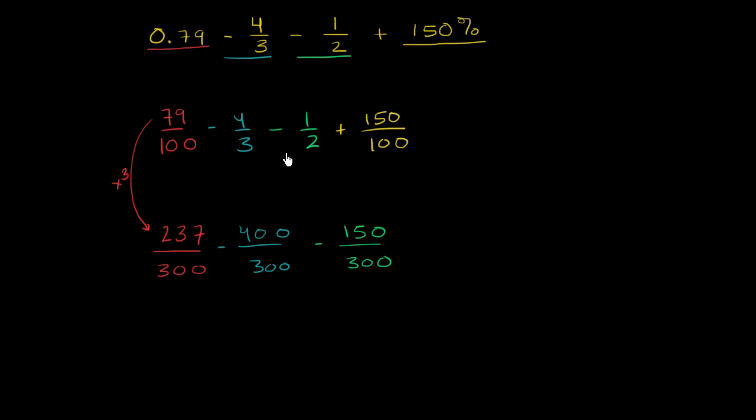And then finally, 150 over 100, well, we're multiplying the denominator by 3 to get to 300, to go from 100 to 300. So we have to do the same thing in the numerator. So 3 times 150 is 450.